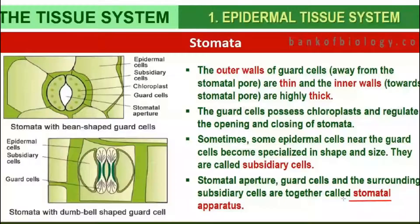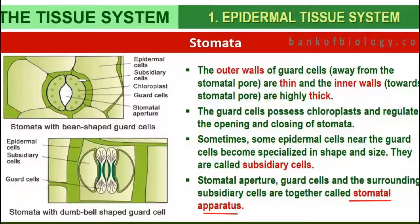The stomatal apparatus consists of the stomatal aperture (the stomata opening), which is protected by guard cells, and the outer subsidiary cells. So subsidiary cells, guard cells, and stomata together make up the stomatal apparatus.